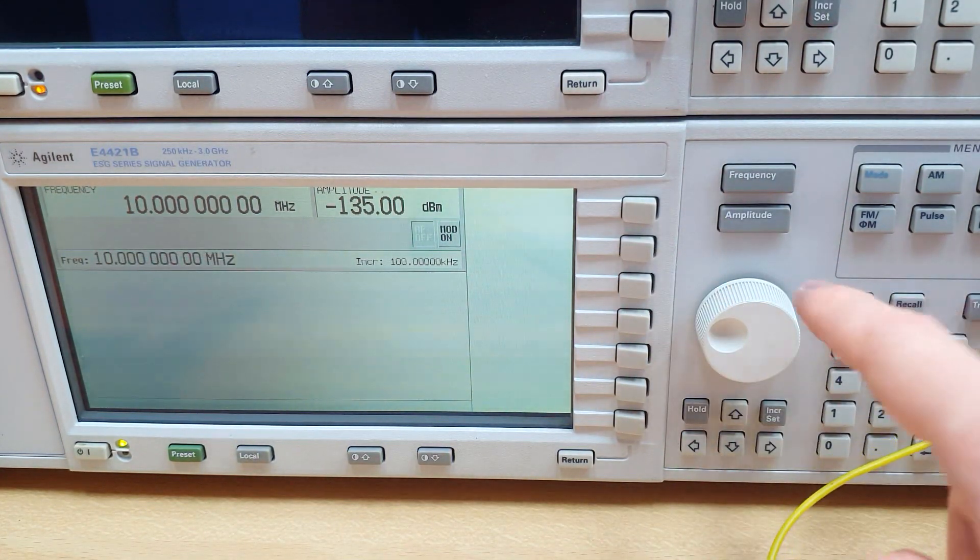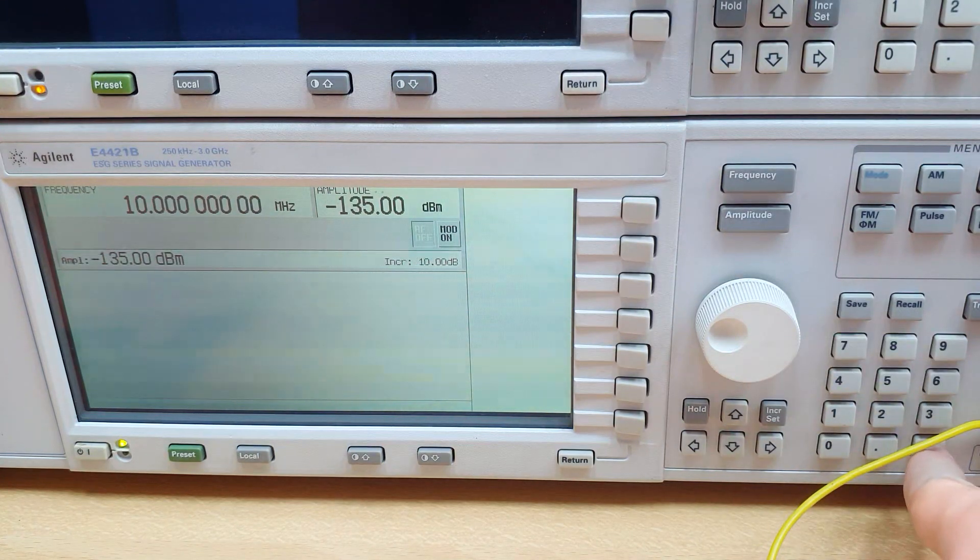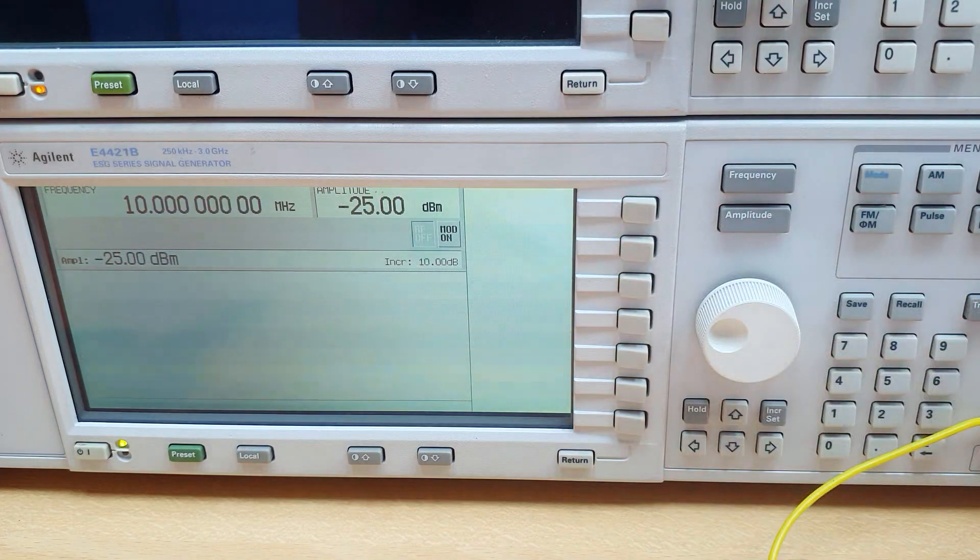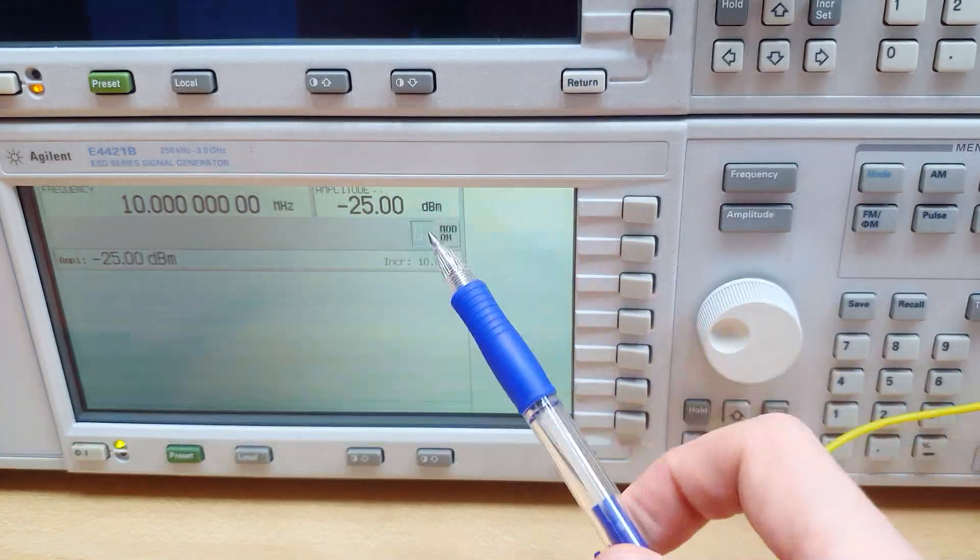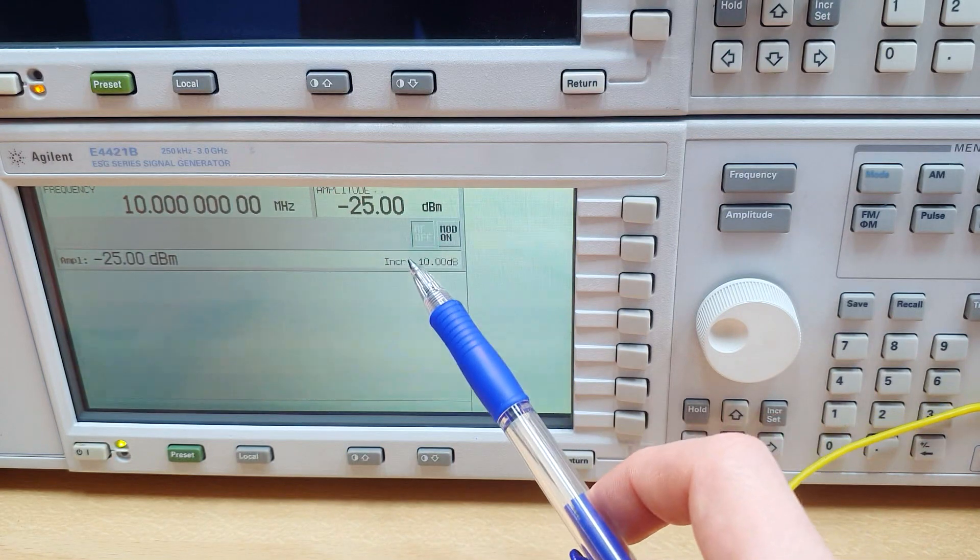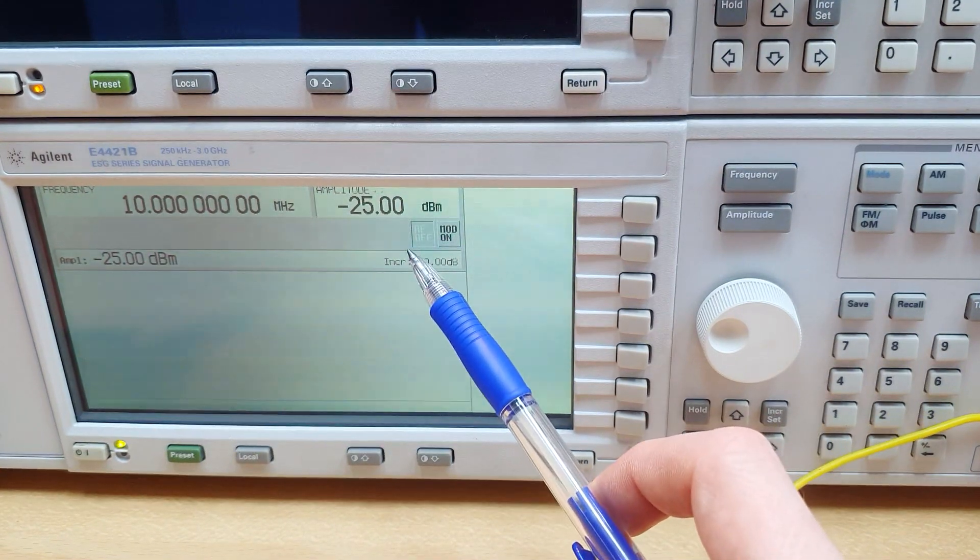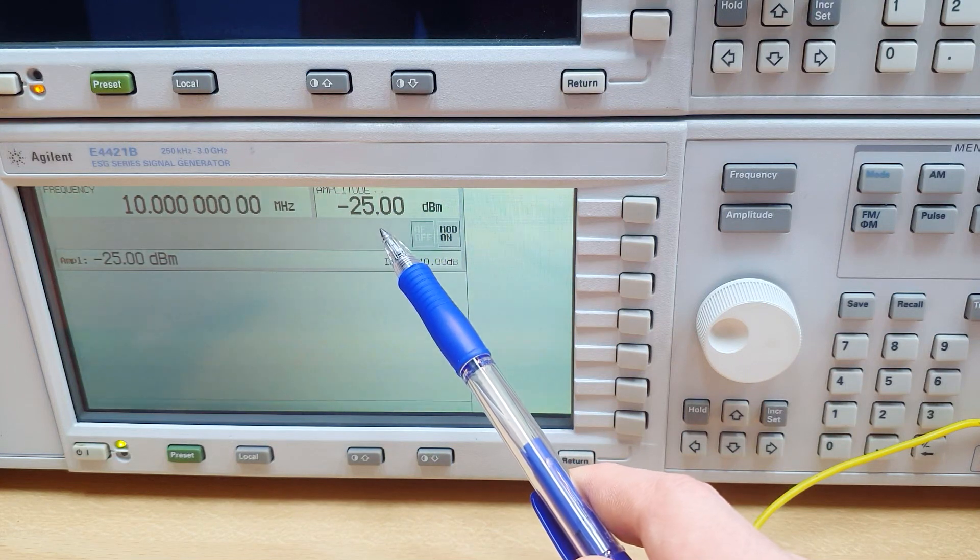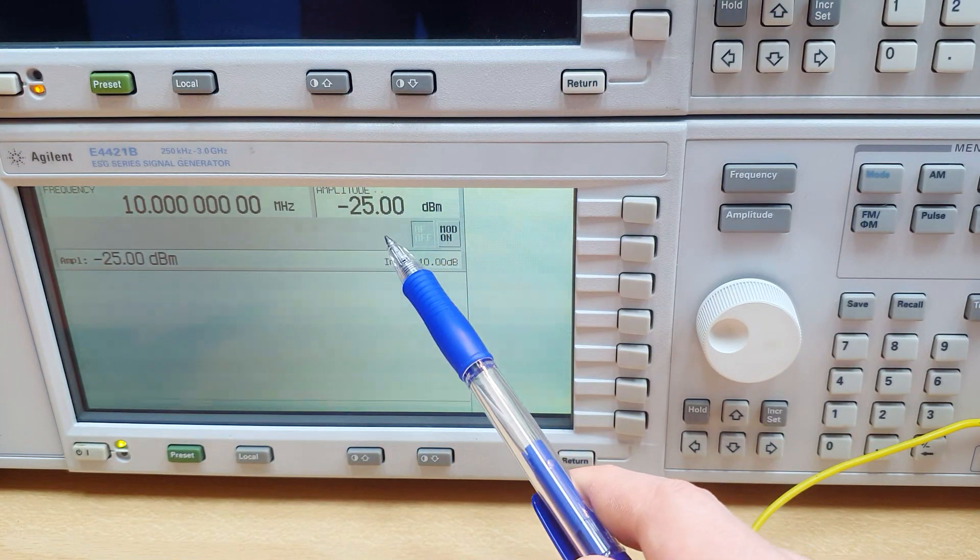First let's configure the signal generator to the first frequency point, here 10 meg, and the amplitude level to minus 25 dB. I choose this input level here because in first tests I saw that this input level will not compress the output of the amplifier. It's better to use a lower value here to reduce the chance of nonlinear distortion.